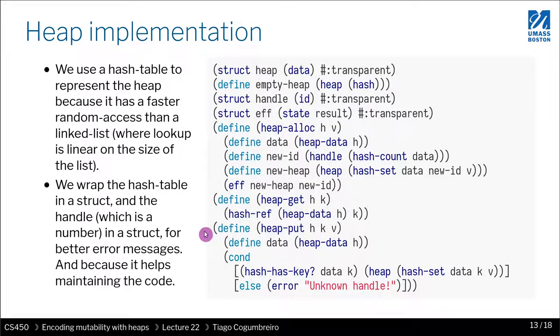Finally, we define heap-put. So what does heap-put do? First thing we do is we need to add a new pair, K of V, right? So what we do, we take the hash table from the heap.